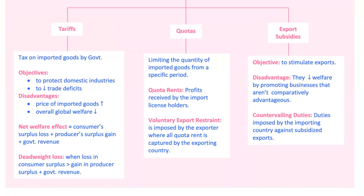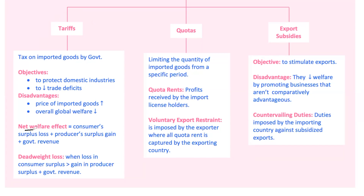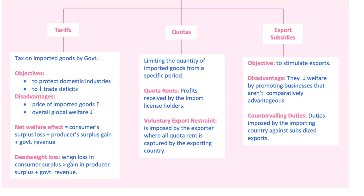Let's dig deeper. Tariffs are taxes on imports. They aim to protect local industries and reduce trade deficits, but they also make imported goods pricier, which reduces demand for them and can lower global welfare. For small countries — those that can't influence global prices — tariffs generally result in net welfare losses. However, for large countries, big importers that can influence prices, tariffs can sometimes lead to net gains, but only if they don't face retaliation and the benefits outweigh the losses.